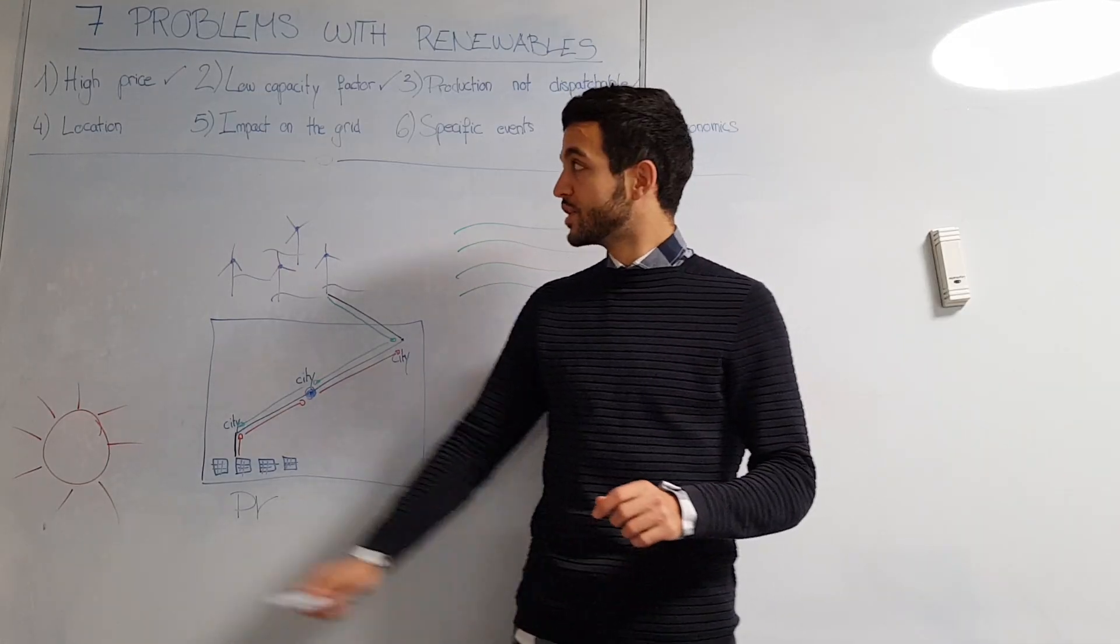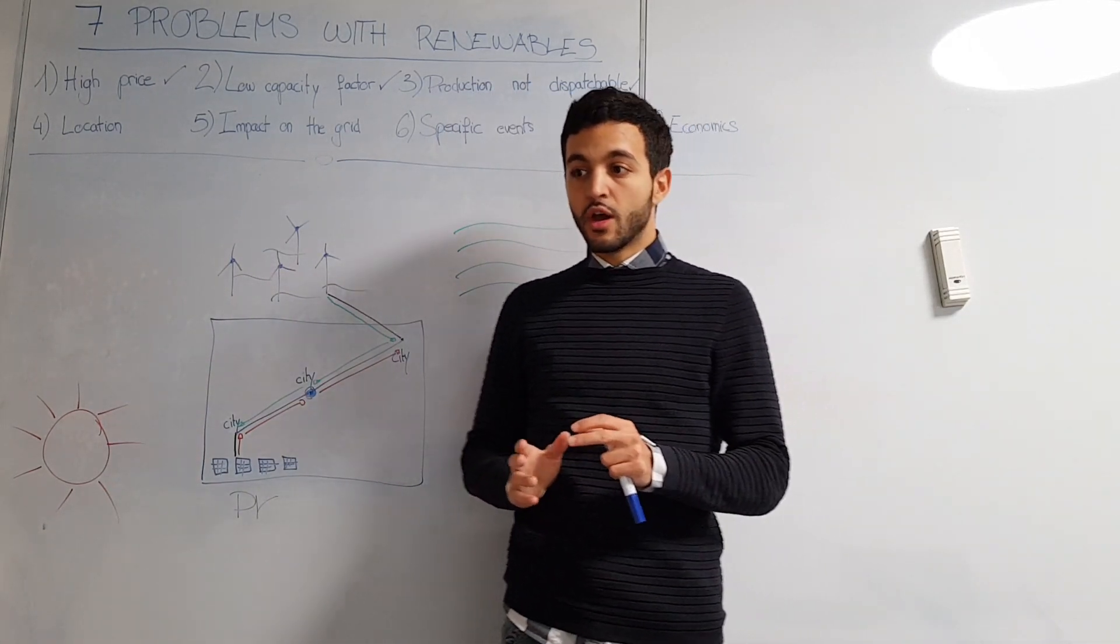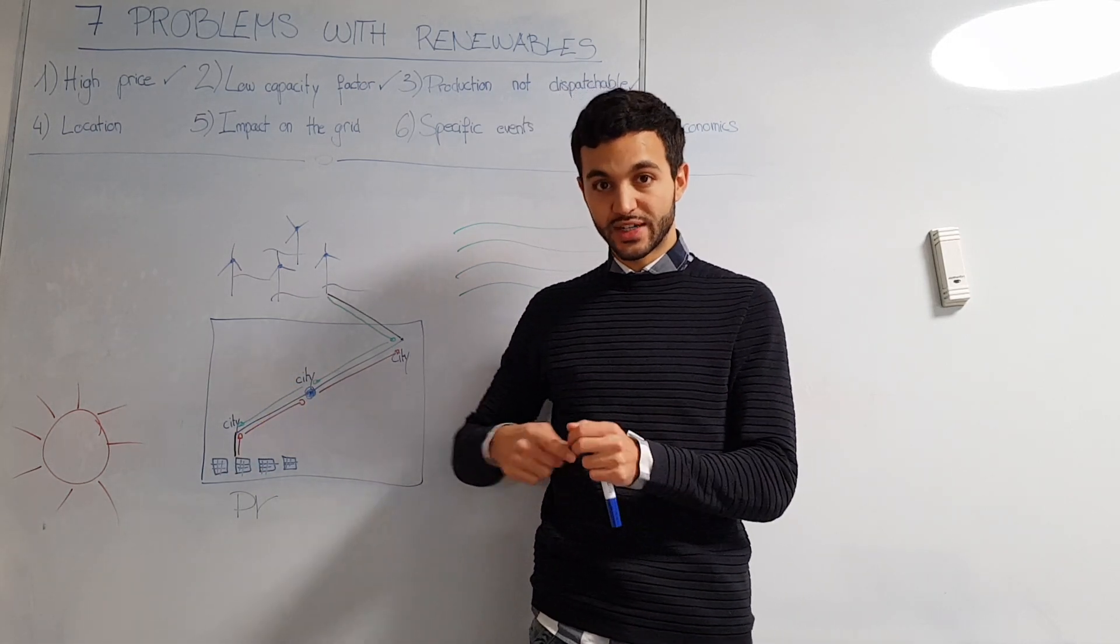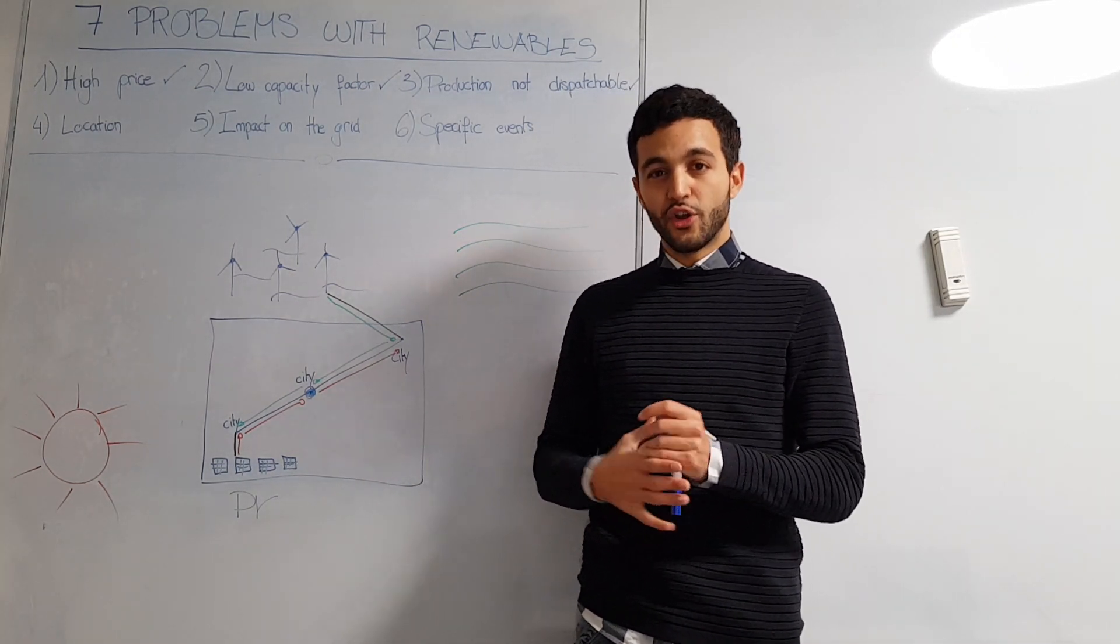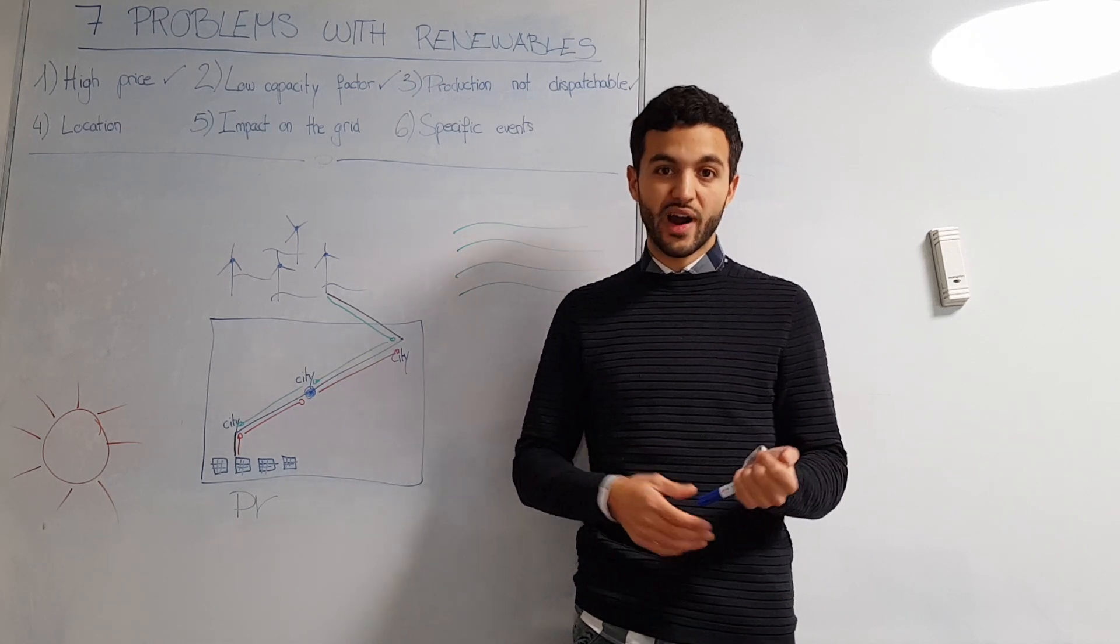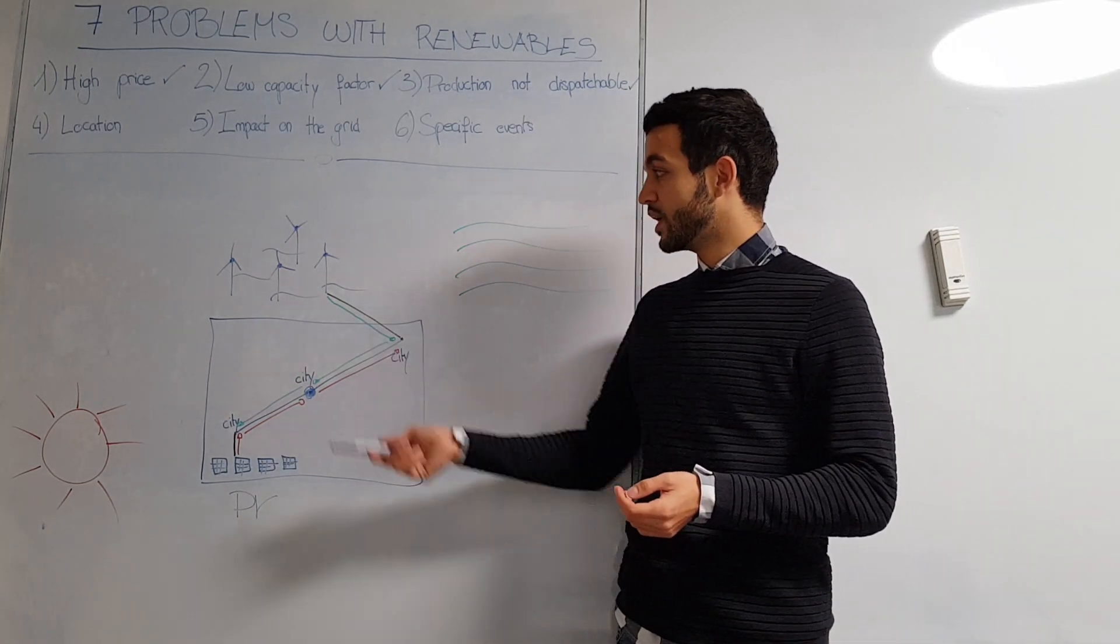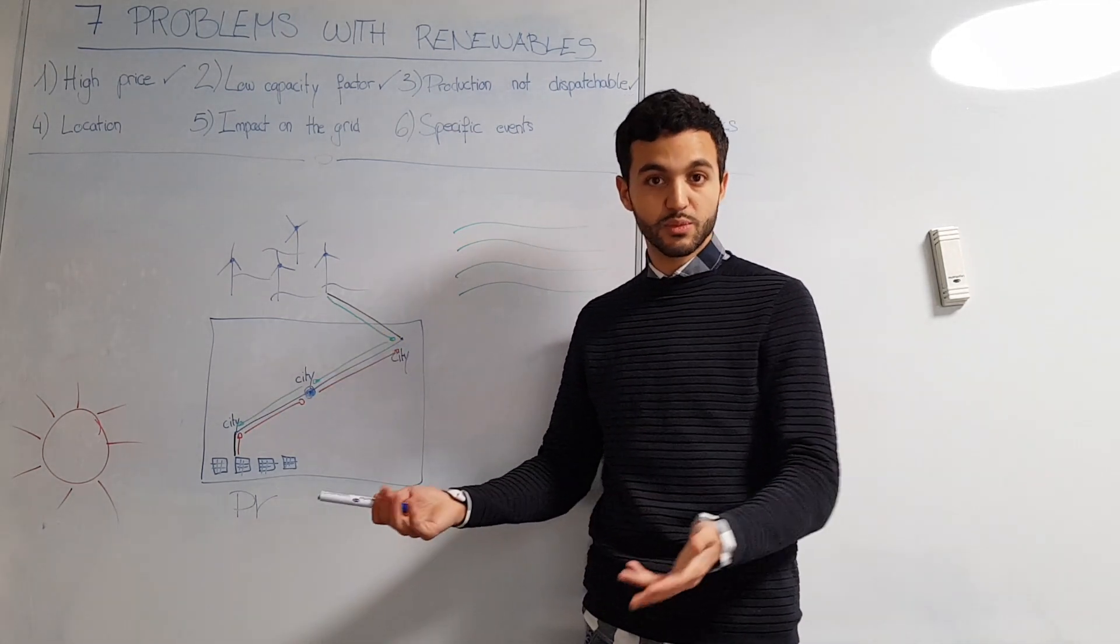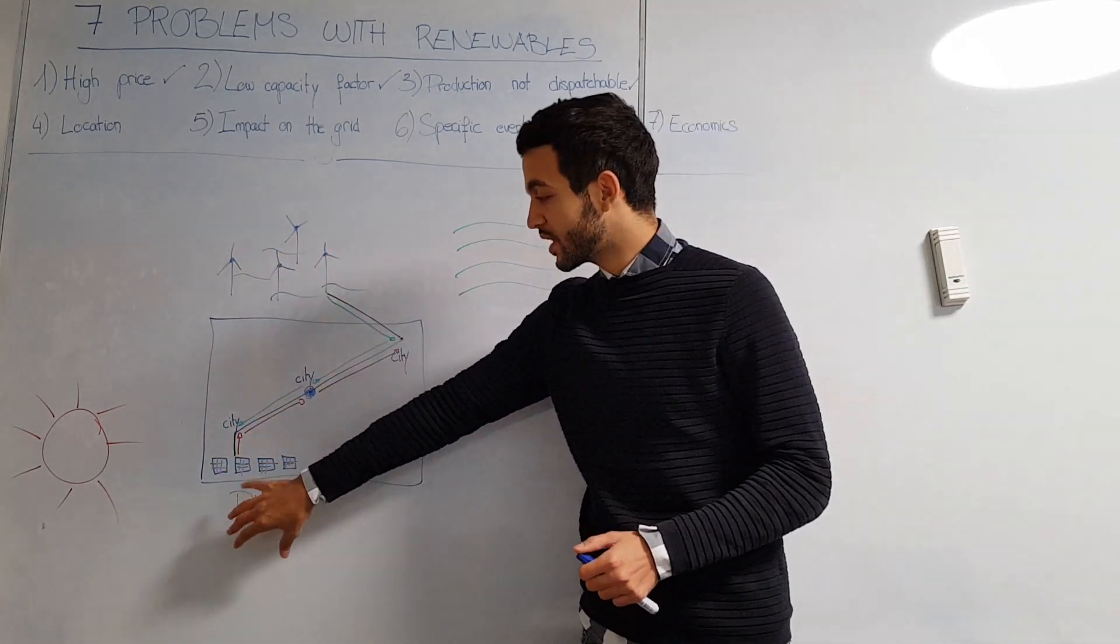Now we get to the fourth point: location. Generally speaking in power systems, you try to put your production site close to your consumption place, so the distance is short and you avoid power loss in transmission. You can't really have this thinking with renewables because you'll try to install your power plant where you have higher efficiency, so a higher capacity factor. Let's go through this example: in the north you have wind turbines because it's more windy, and in the south you install PV because it's more sunny.